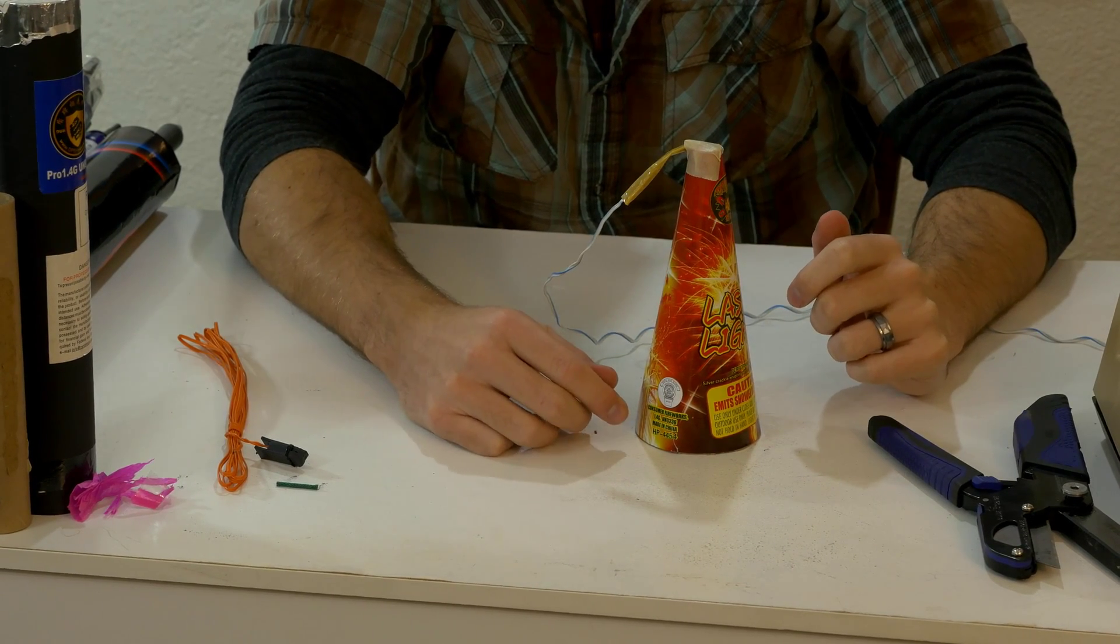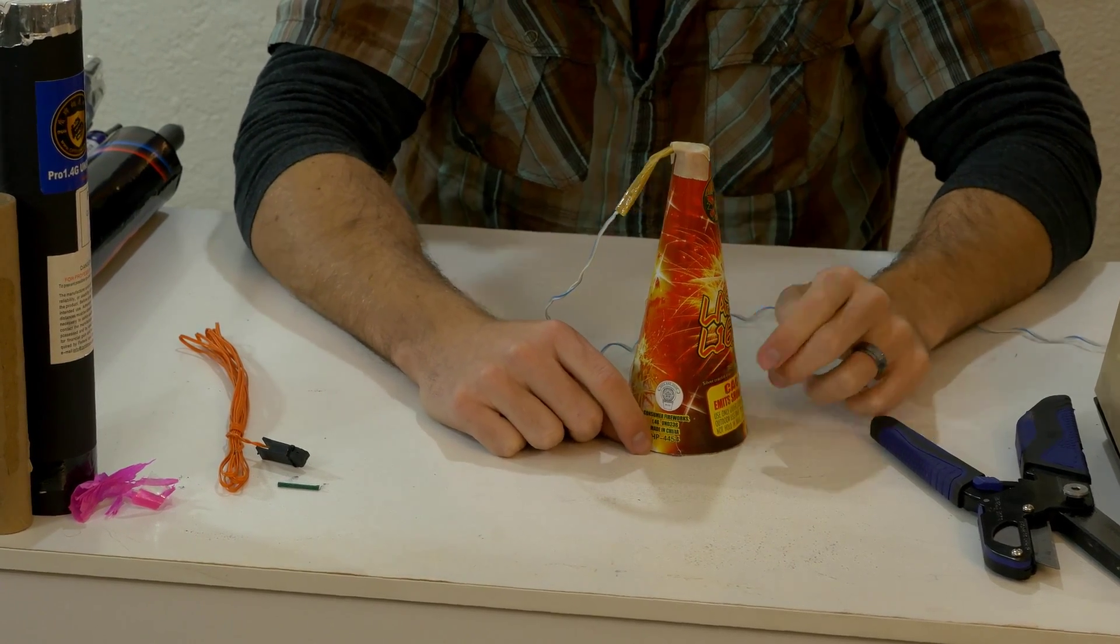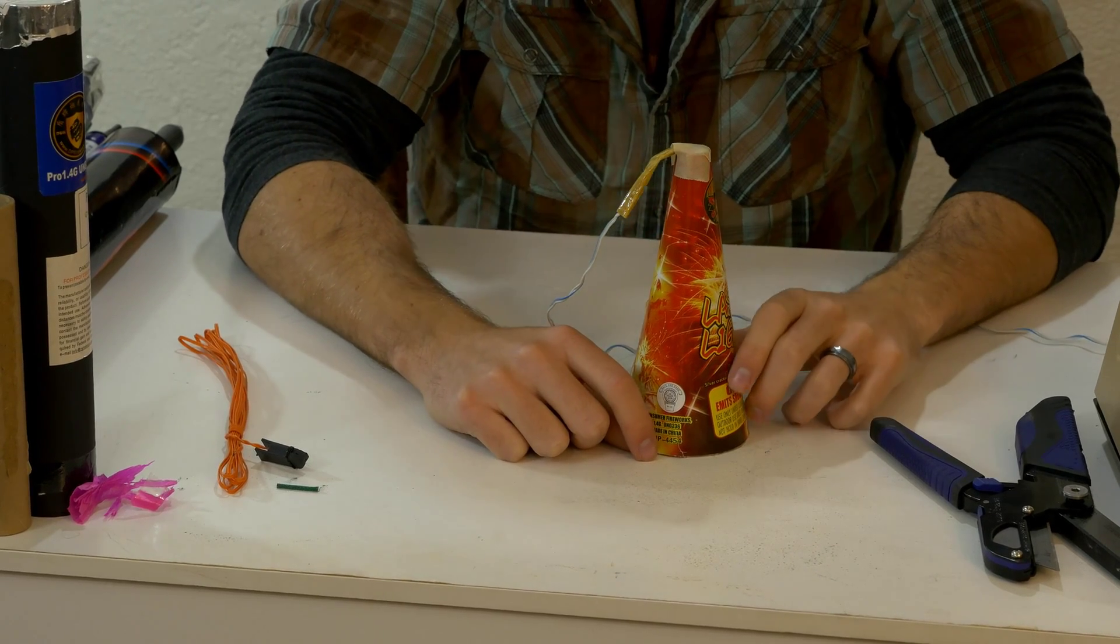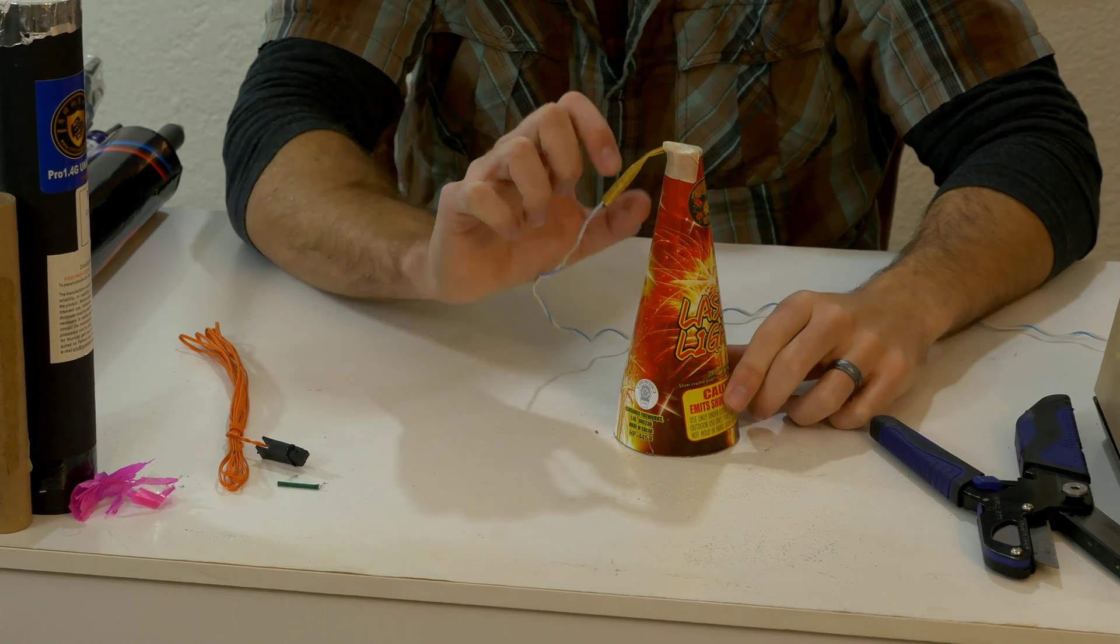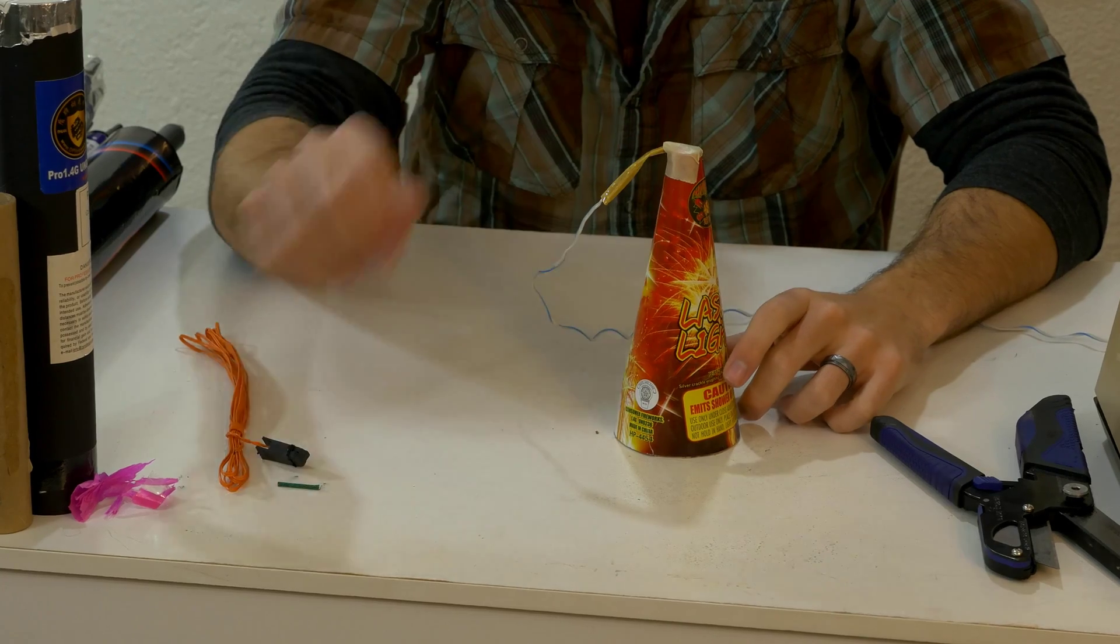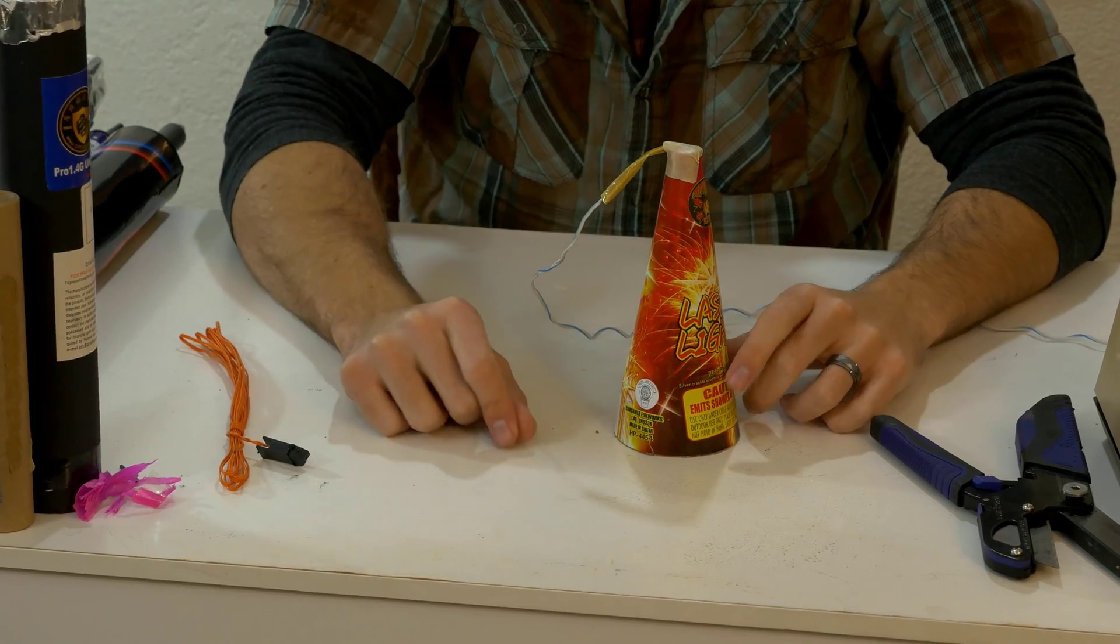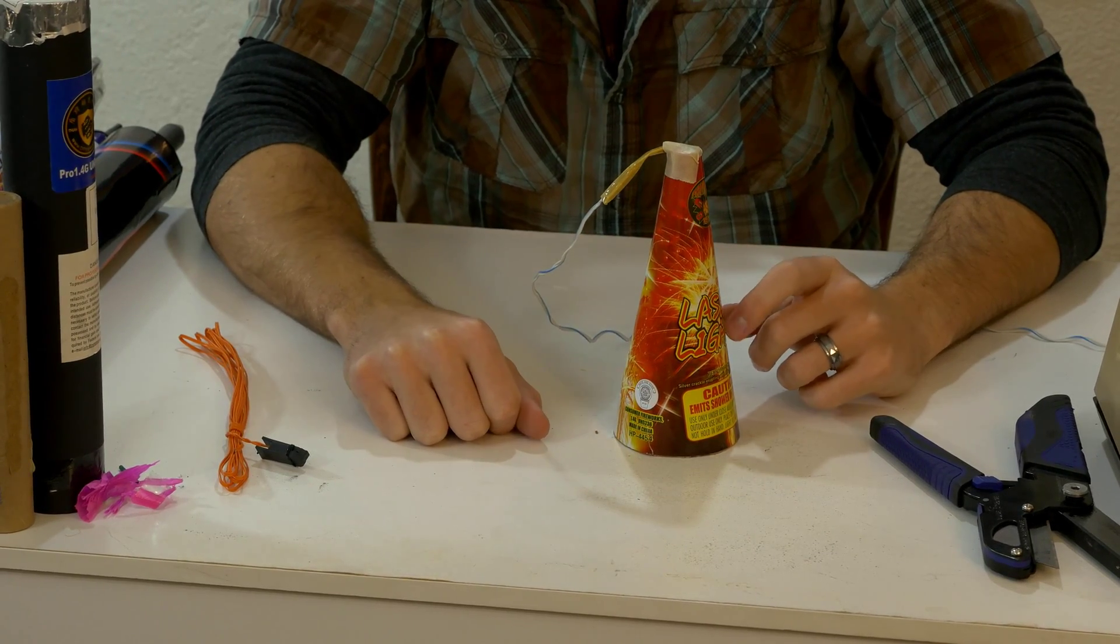So fusing fountains can be real easy, pretty quick. Not much to it. But if you're trying to do an e-match, it's very helpful to have that bit of quick match. Otherwise, I think talons are much easier.